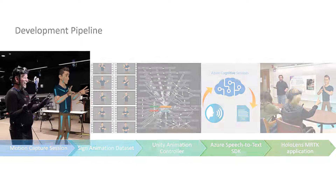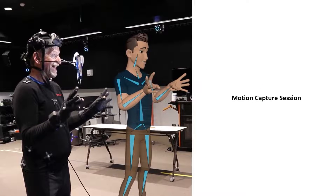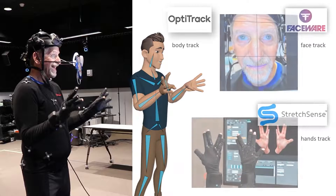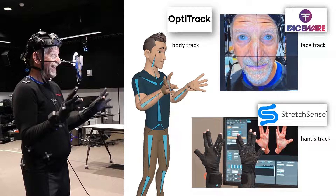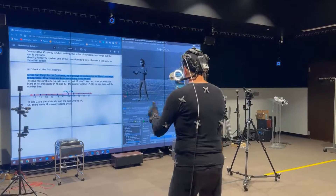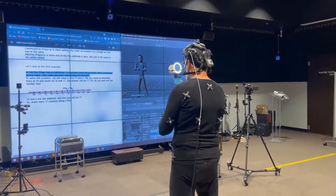To ensure the quality of signing animation on the holographic avatar, we adopted motion capture technology to create the sign animation. We recruited a professional signer to sign a math lesson and captured his body, face, and hand motion data through three different platforms: OptiTrack, FaceWear, and StretchSense, respectively. The data from the three tracking systems were transferred into MotionBuilder in real-time on a rigged character. Here is a quick look at our motion capture session.